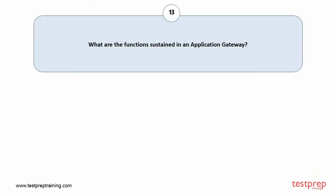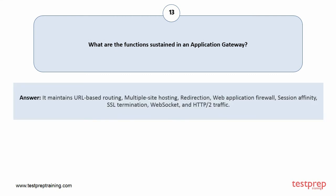Question number thirteen: What are the functions sustained in an application gateway? It maintains URL-based routing, multiple site hosting, redirection, web application firewall, session affinity, SSL termination, web socket, and HTTP/2 traffic.